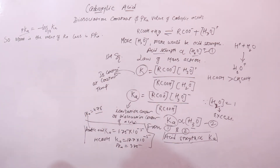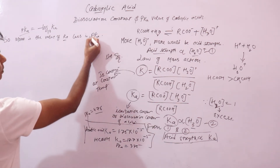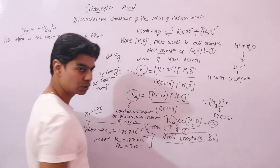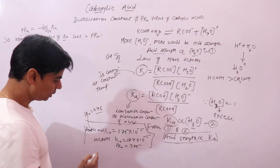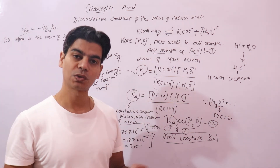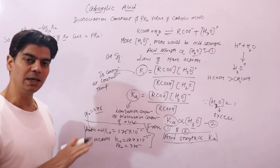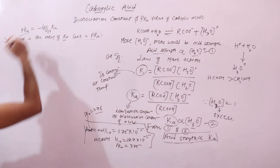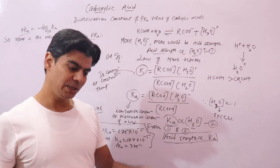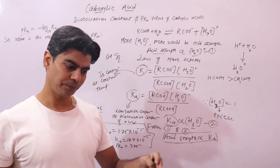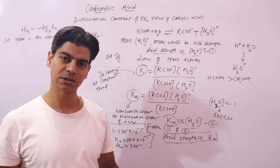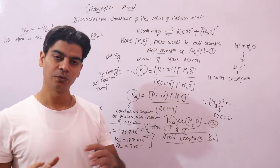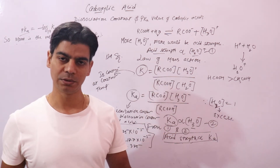For stronger acids, Ka is directly proportional to hydronium ion concentration, so Ka would be more for stronger acids, but their pKa value would be less — because more Ka means less pKa. So for stronger acids, pKa value is less than for weaker acids, whereas Ka value for stronger acids would be more than for weaker acids.